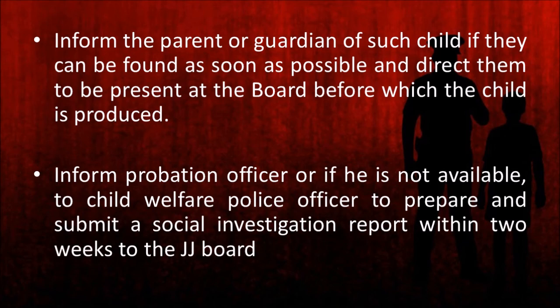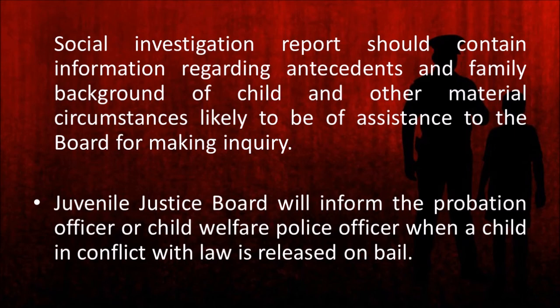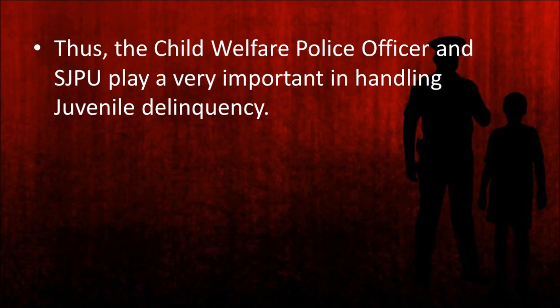The social investigation report should contain the background of the child, all information regarding its antecedents, its family background, and all other material circumstances which will assist the board in making its inquiry. The Juvenile Justice Board will also inform the probation officer or the child welfare police officer when a child in conflict with law is released on bail. Thus, the child welfare police officer and the Special Juvenile Police Unit play a very important role from the time a child alleged to be in conflict with law is apprehended until the time it is produced before the Juvenile Justice Board.